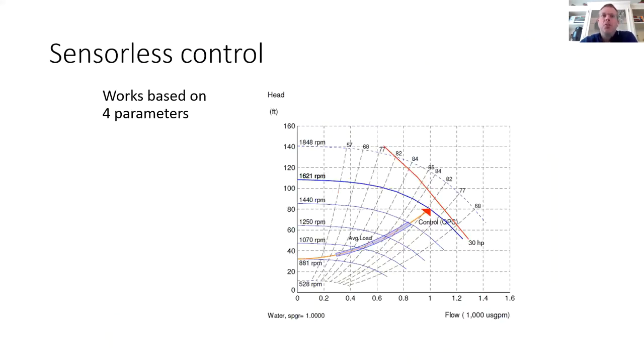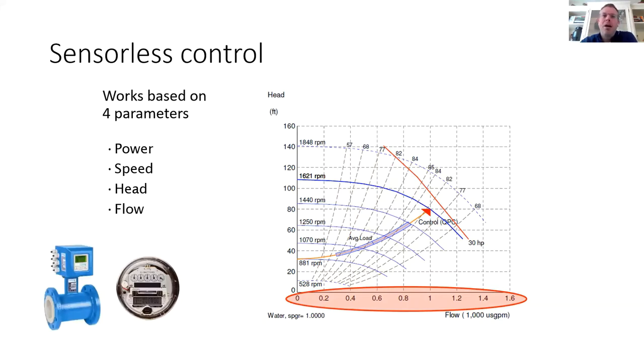So sensorless control works based on four parameters: power, speed, head, and flow. So our dynamic pump sizing and selection program works in the same way. If you input flow and head into our selection program, you get as an output power and speed along with impeller size, efficiency, pump size, etc. The sensorless controller reads power and speed from the VFD or the ECM to figure out the flow and head based on the tested pump map. Thus, the program always knows precisely where it's operating and could allow you to remove a flow meter and or a power meter.